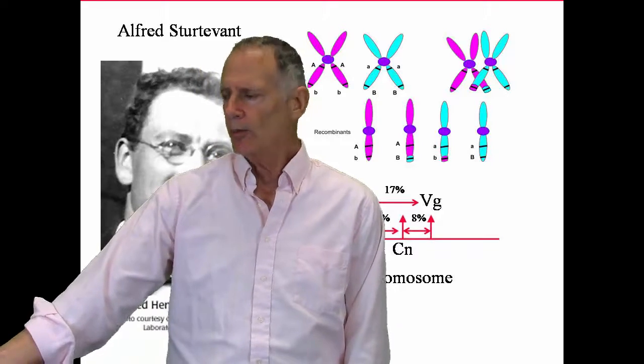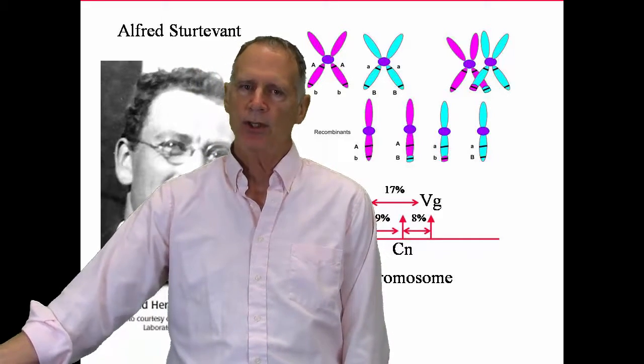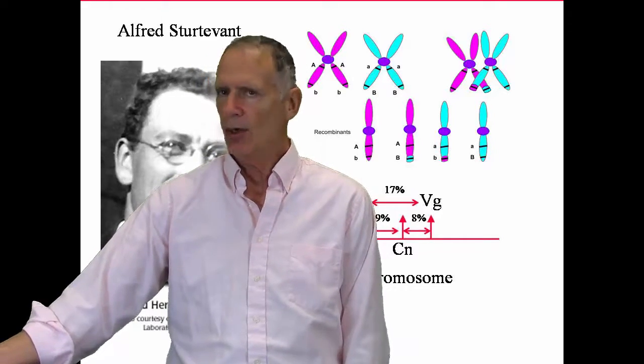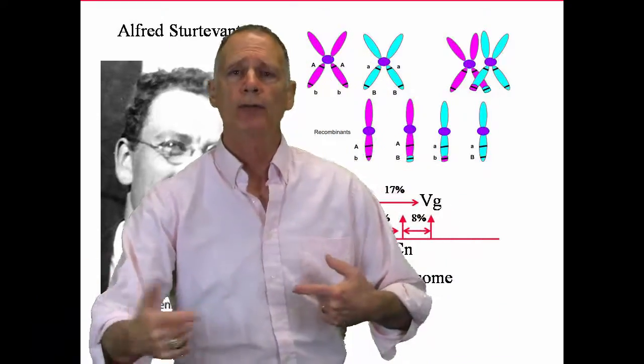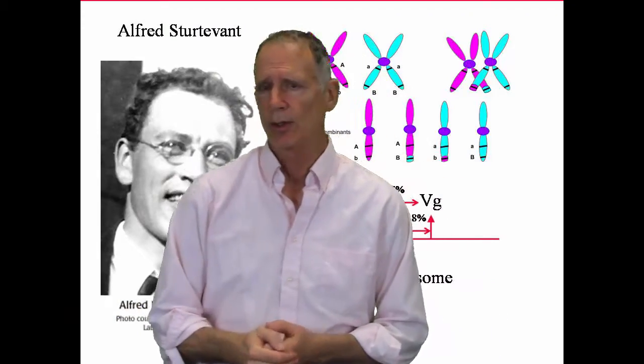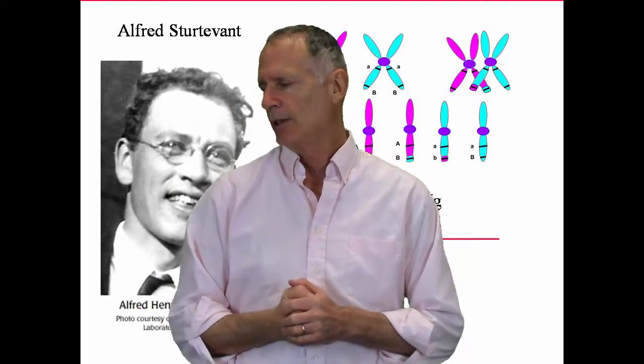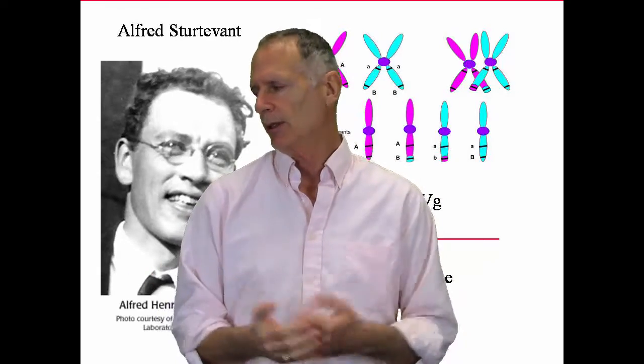And then how you would get different recessive genes crossing over. And the farther they were located from one another, the more often they would cross over and the higher the results. That's where the 17% or the 8% or the 9% came from. So, this was a brilliant discovery.